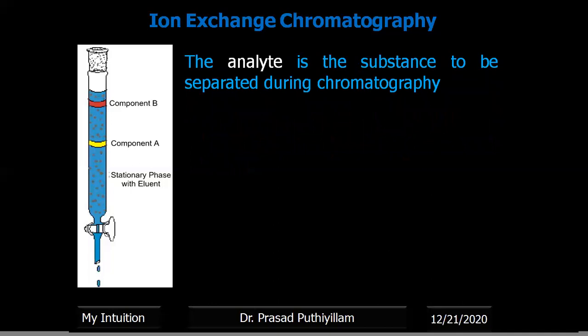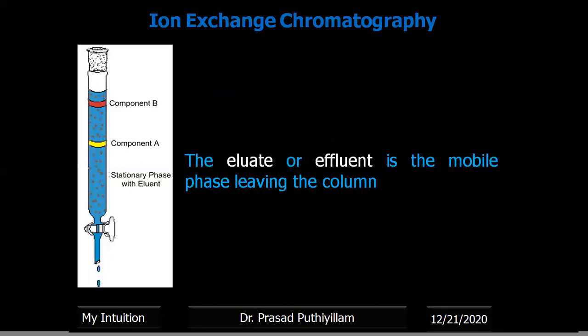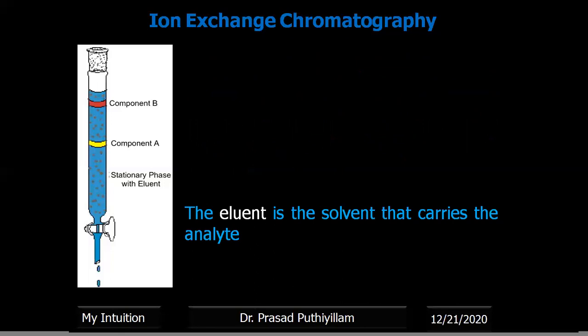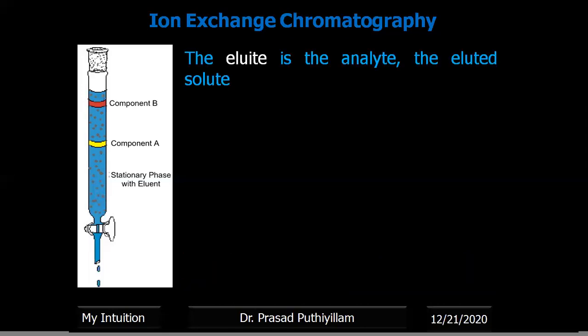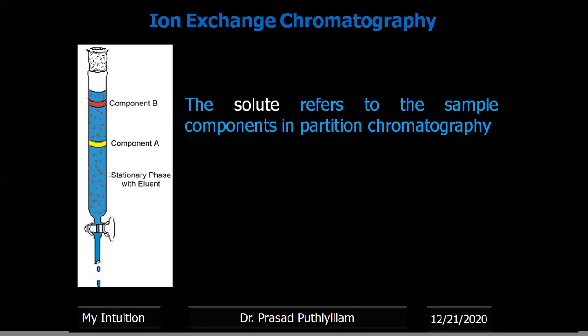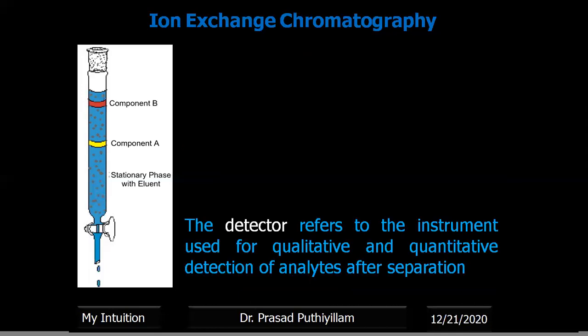When we discuss ion exchange chromatography, there are terms we use. An analyte is the substance to be separated during chromatography. A sample is the matter analyzed in chromatography. Eluate or effluent is the mobile phase leaving the column. Eluent is the solvent that carries the analyte. Eluate refers to the analyte as an eluted solute. The stationary phase is the substance fixed in place, and the detector is the instrument used to qualitatively and quantitatively measure the analytes after separation.